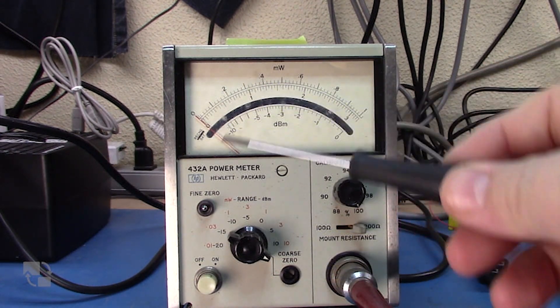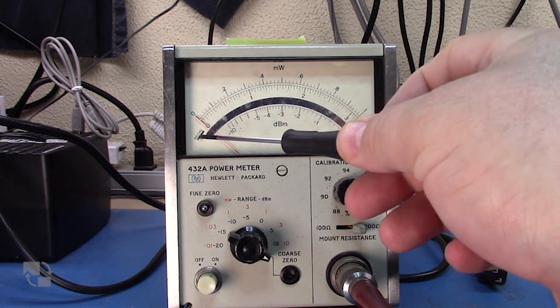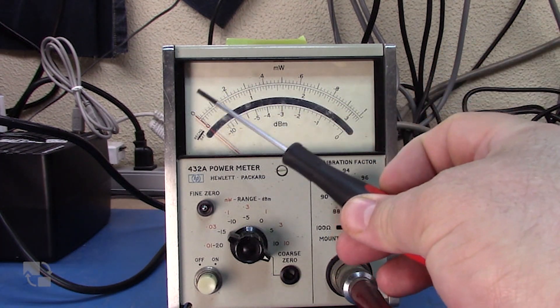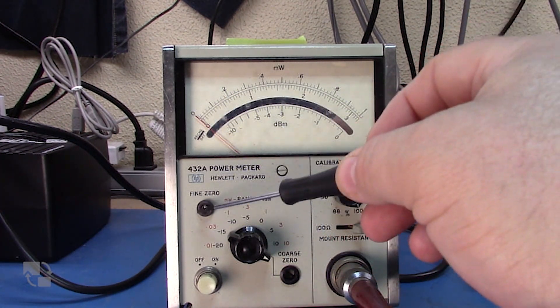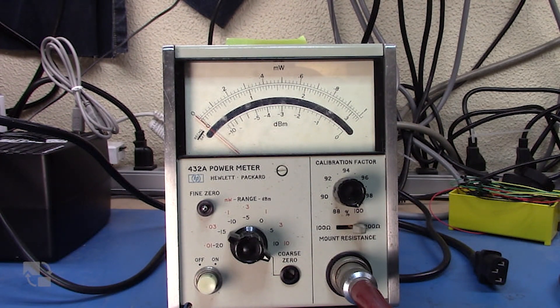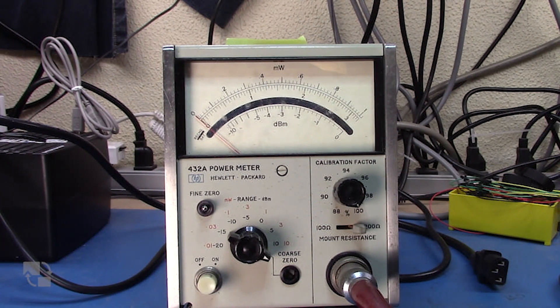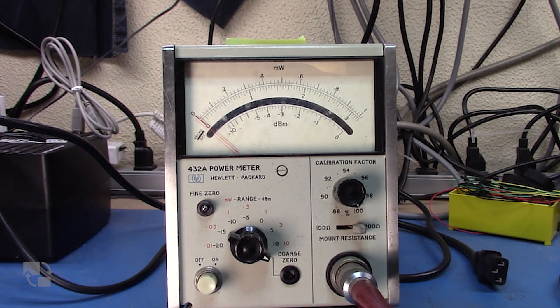We could have set the calibration factor to 100 or something. Anyway, the process you go through is basically set course zero, get it to use that to get that back to zero. Then you select your range and then you use find zero to reset it. So let's take a quick look at the block diagram again. And we'll have a look and see if we can trace through where the problem might be.